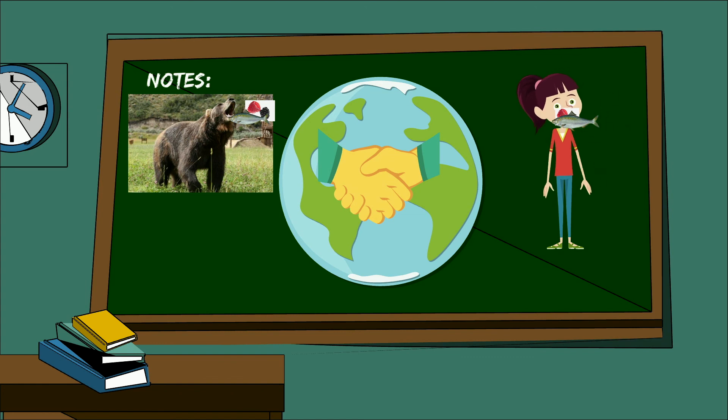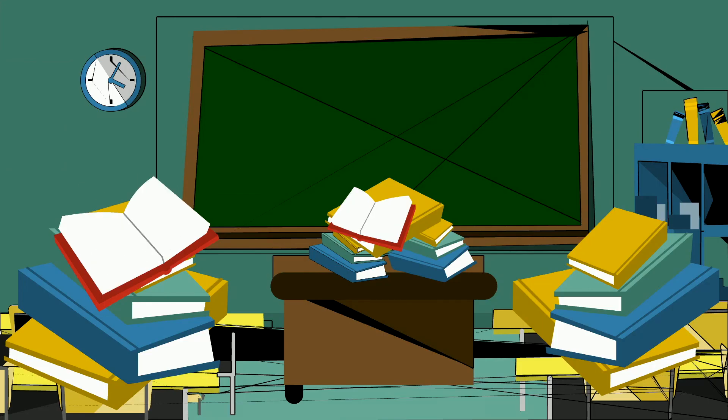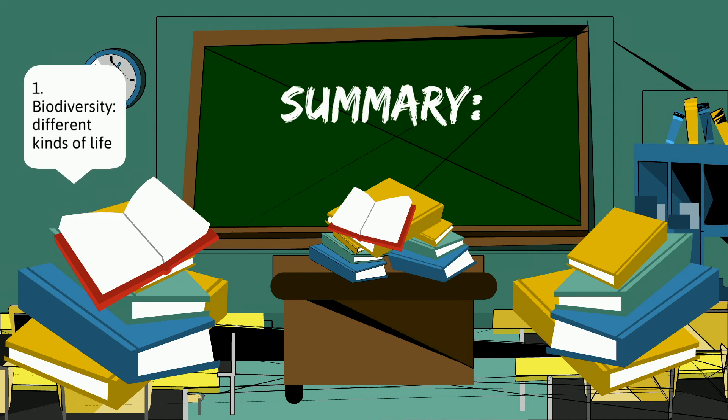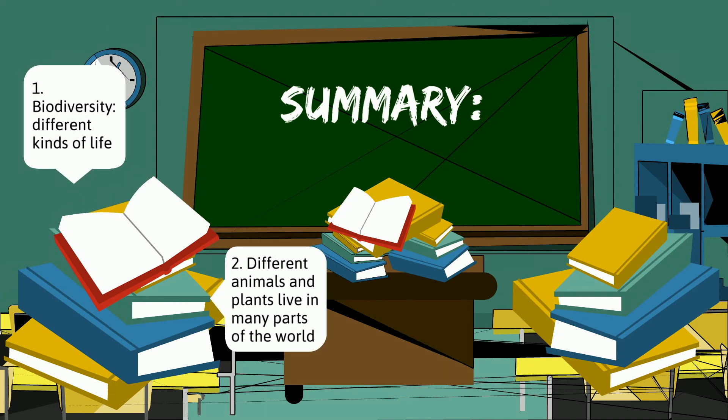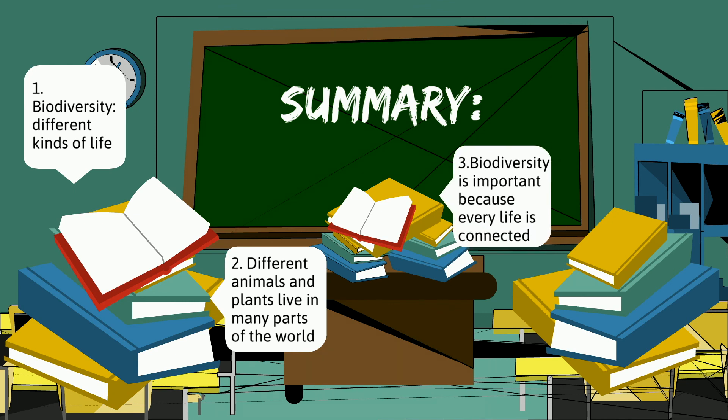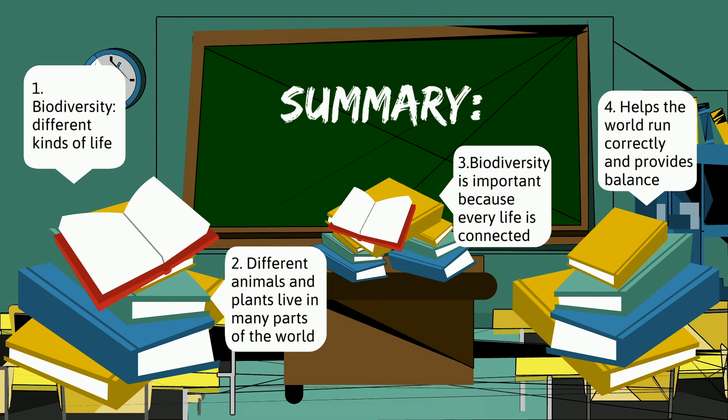So, what did we learn today? We learned that biodiversity means different kinds of life. There are different animals and plants that live in many parts of the world. Biodiversity is important because every life is connected. It helps the world run correctly, and it gives us balance.